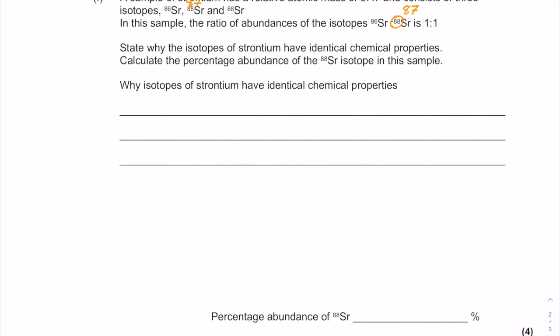Why isotopes of strontium have identical properties is to be written on the line. So we'll start off with that one. They have identical properties because they have the same number of electrons.